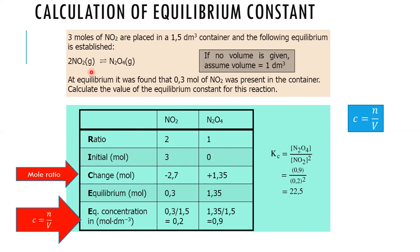In the RICE table, write NO2 and N2O4. The mole ratio from the equation is 2 moles NO2 : 1 mole N2O4. The initial moles: we pumped in 3 moles of NO2 and there was 0 moles of N2O4. Skip change for now. At equilibrium, the question tells us 0.3 moles of NO2 was present.